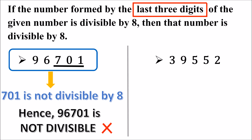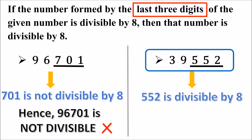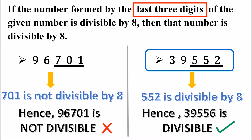Is this number divisible by 8? Let's see the last 3 digits of the given number — it's 552. So the number formed by the last 3 digits is 552. Is 552 divisible by 8? Yes, 552 is divisible by 8. Hence, the given number is divisible by 8.